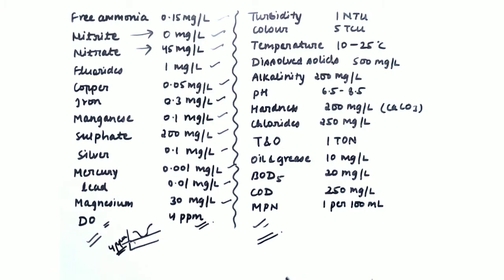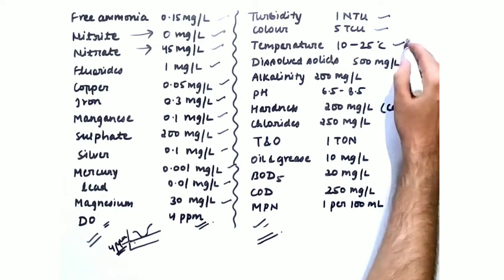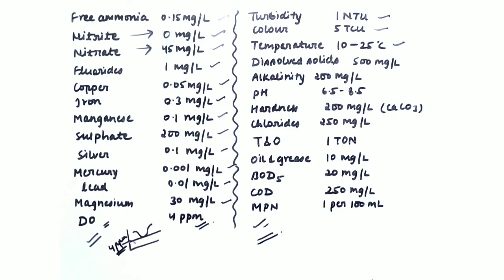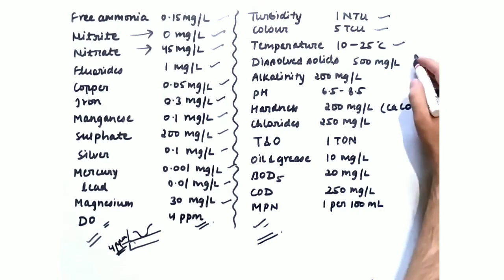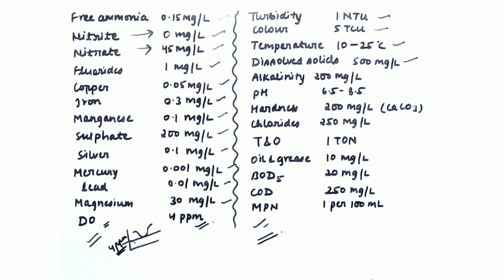The properties consist of physical, chemical, and biological parameters. Turbidity, measured in NTU, should be no more than 1 NTU. Color should be 5 TCU. Tolerable temperature is 10 to 25°C — being on the higher side is dangerous because more temperature gives rise to more microorganisms, and their activity increases about 10 times with every 1°C rise. Dissolved solids can be 500 mg per liter and are not that dangerous.